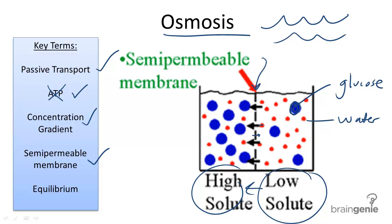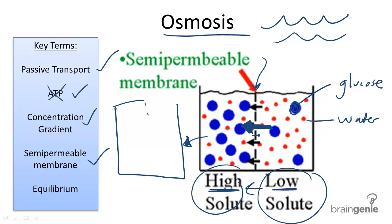The net movement — shown here with a larger arrow to the left — is going to be in the direction from where there is a low solute concentration to where there is a high solute concentration. After several minutes, the capsule might start to show a lot more water on the left to balance out the solute concentration, and a lot less on the right, equalizing the concentration of water on both sides.